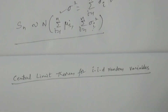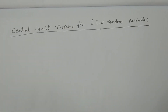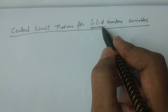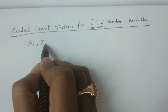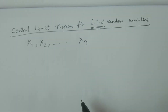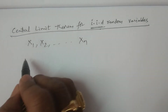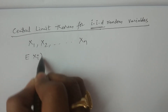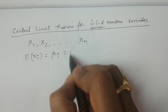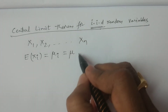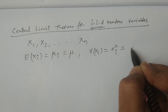Now I define the Central Limit Theorem for IID — independently and identically distributed random variables. Consider x₁, x₂, ..., xₙ are independently and identically distributed. This means E(xᵢ) = μ for all i, and Var(xᵢ) = σ² for all i, since they are identically distributed.